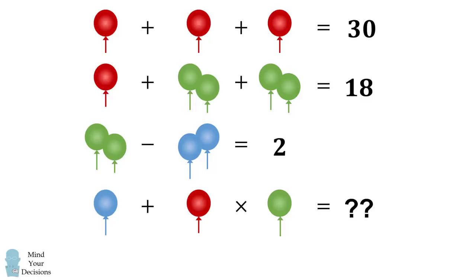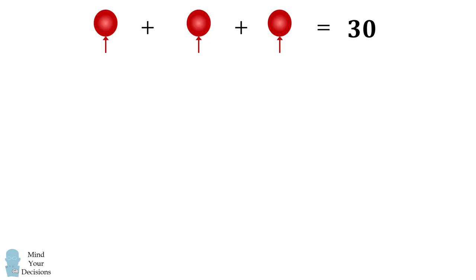So how can we solve this system of equations? We'll start out by solving each equation in turn. The first equation has three red balloons equal to 30. Since 10 plus 10 plus 10 is equal to 30, we can solve that a single red balloon is equal to 10.